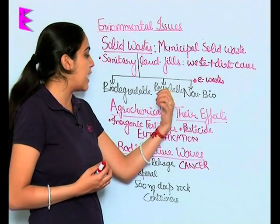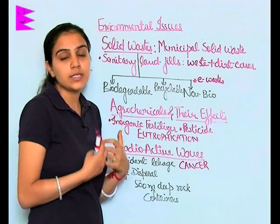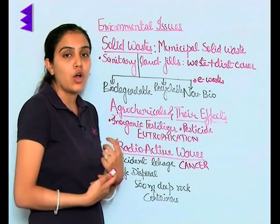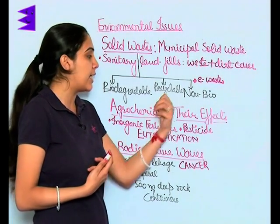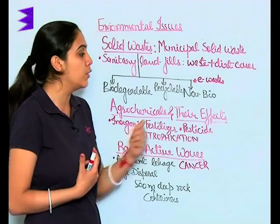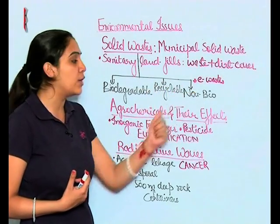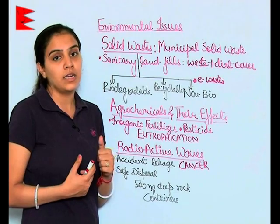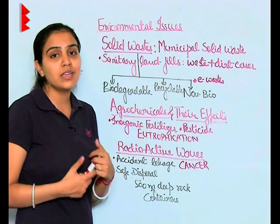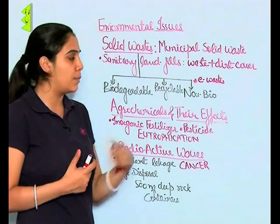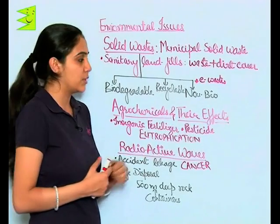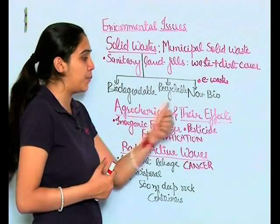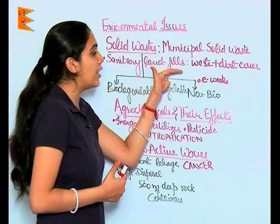The recyclable waste includes wastes which can be recycled — that is, after recycling they are ready for reuse. The biggest and major problem is non-biodegradable solid waste because it can neither be biodegraded, that is decomposed, nor can be reused. So this is the major reason for pollution.